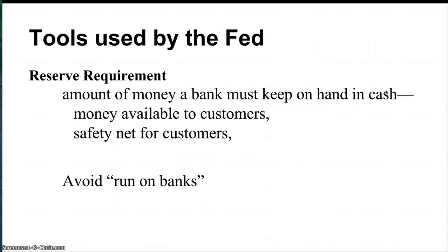Back in the 1930s at the beginning of the Great Depression, people went to the bank to get their money out and it turned out the bank had loaned it all out and lost it in the financial crash or poor investments. So to avoid that, the Federal Reserve requires banks to have a minimum amount of money in their vaults at all times. And as a side note, that's why when bank robbers show up there's actually something to rob.